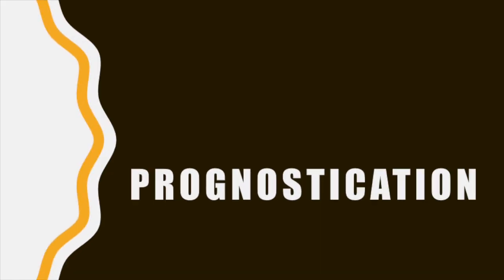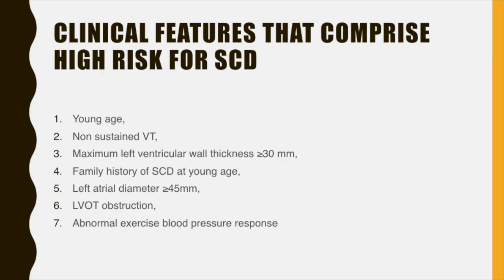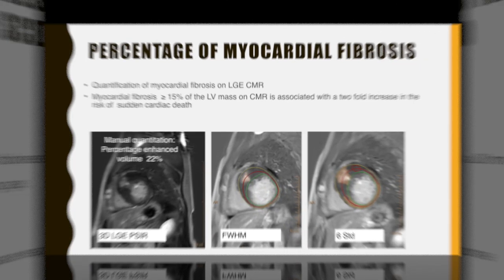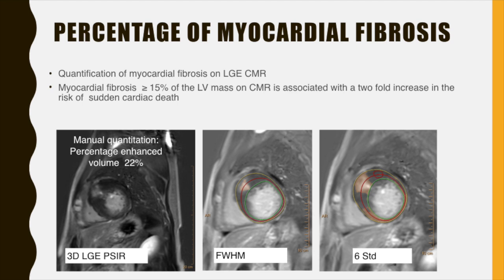How do we establish prognosis in HCM using cardiac MR? Several clinical features comprise high risk for sudden cardiac death in HCM, including young age, presence of non-sustained ventricular tachycardia, maximum LV wall thickness of more than or equal to 30 mm, family history of sudden cardiac death at a young age, left atrial diameter of more than 45 mm, presence of LVOT obstruction, and abnormal exercise blood pressure response. Quantification of myocardial fibrosis is possible on CMR, and myocardial fibrosis more than 50% of the LV mass on CMR has been shown to be associated with a two-fold increase in the risk of sudden cardiac death. Thus, myocardial fibrosis serves as a prognostic feature on cardiac MR.